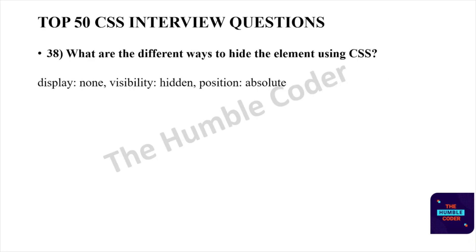What are the different ways to hide elements using CSS? You can use display: none, visibility: hidden, or position: absolute. By using any of these three ways you can hide elements using CSS.